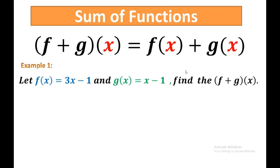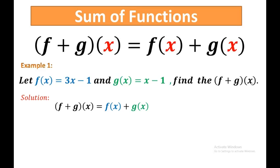Example number 1: Let f(x) = 3x + 1 and g(x) = x − 1. Find the sum (f + g)(x). Solution: (f + g)(x) = f(x) + g(x). Replace f(x) with 3x + 1 and g(x) with x − 1.